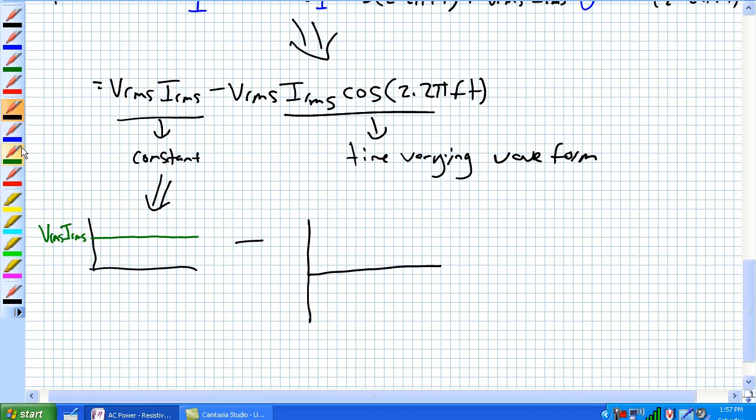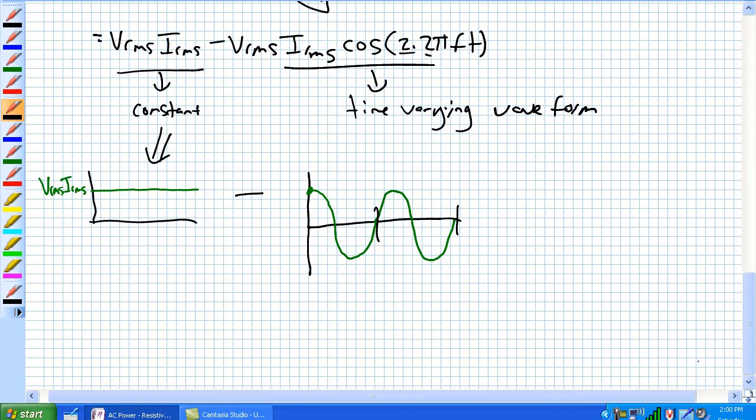So it's a cosine. So cosine starts up here and it's going to go down through zero and back up through zero and this is going to be at twice the frequency of the voltage and current because we've got this 2 times 2 pi there.